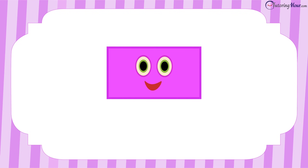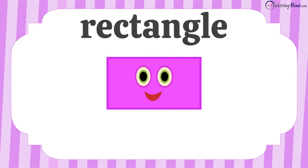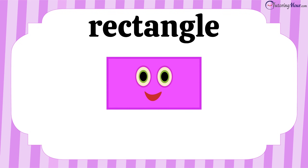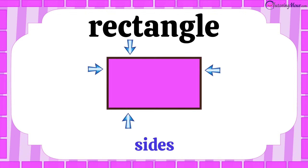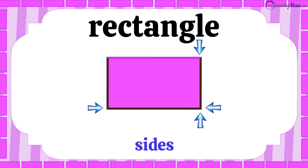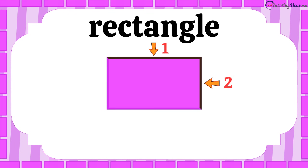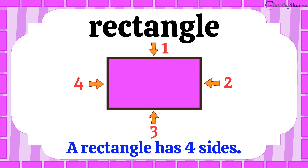Now let's take a look at our next shape: the rectangle. A rectangle has four sides. These are the sides of the rectangle. Let's count the sides: one, two, three, and four. Yes, the rectangle has four sides.